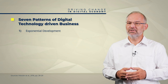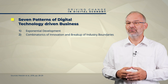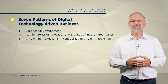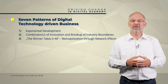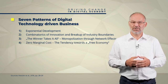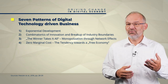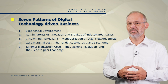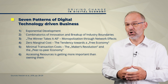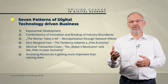First, the phenomenon of exponential developments. Second, combinatorics of innovation and dissolution of industry boundaries. Third, the winner takes it all — monopoly formation through network effects. Fourth, zero marginal cost, the trend towards a free economy. Fifth, minimal transaction cost. Number six, access to resources becomes more important than ownership. And last but not least, number seven, personalization and decentralization.